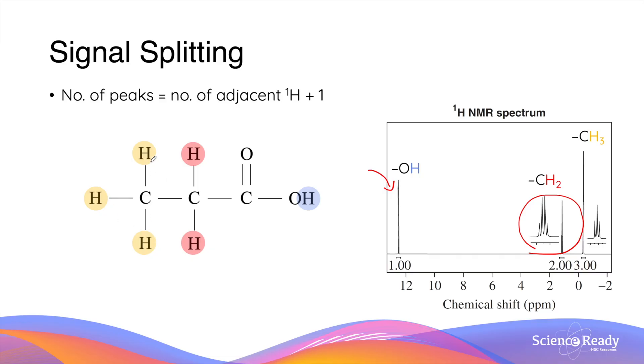For the three protons at the end of the molecule on the third carbon atom, the adjacent carbon atom has two protons attached to it. So the number of peaks is equal to two plus one, which gives us three. This is why the signal produced by the three protons is a triplet, as you can see here on the right-hand side of the spectrum.